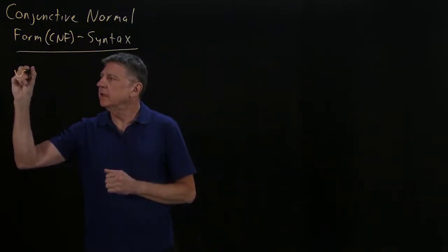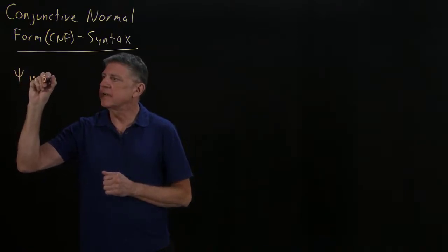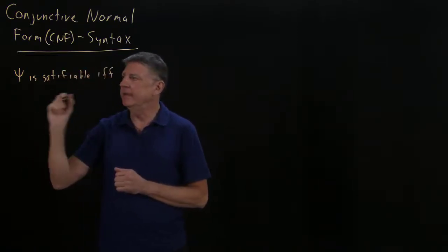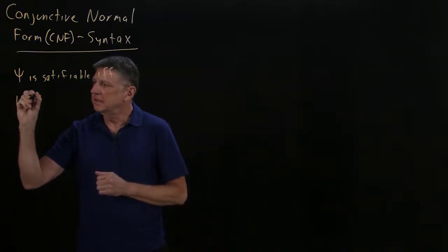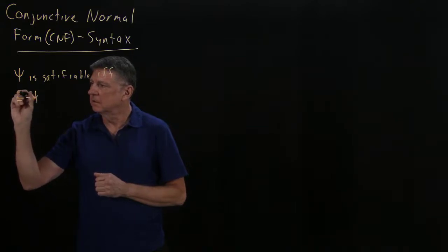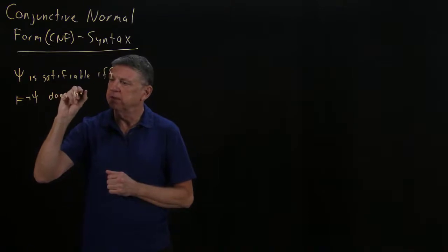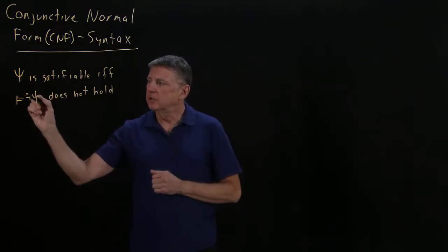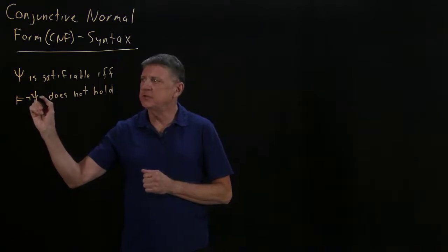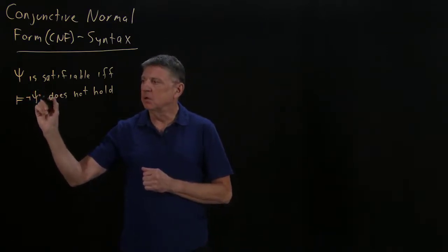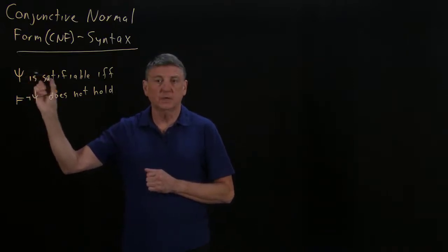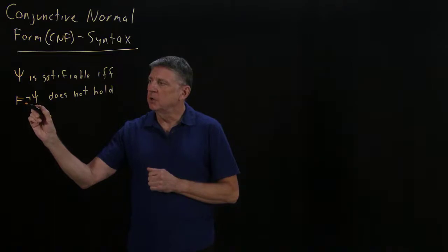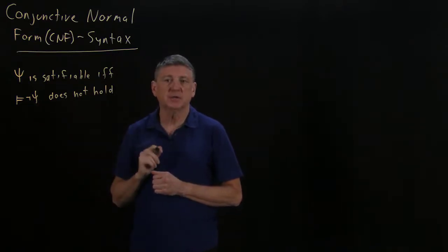What we discovered in previous sessions is that a formula is satisfiable if and only if the negation of that formula does not hold. That is, if we take the negation of that formula and look at whether it is always true under all models, and if there's a model in which that doesn't hold, then that means that our formula is satisfiable.